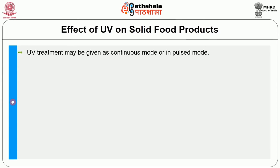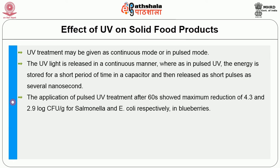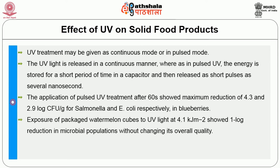UV treatment may be given as a continuous mode or in a pulsed mode. In continuous UV, light is released in a continuous manner, whereas in pulsed UV, energy is stored for a short period of time in a capacitor, then released as short pulses of several nanoseconds. Application of pulsed UV treatment showed a maximum reduction of 4.3 and 2.9 log CFU/g for Salmonella and E. coli respectively in blueberries. Exposure of packaged watermelon cubes to UV light at 4.1 kilojoules per meter square showed one log reduction in microbial population without changing overall quality.